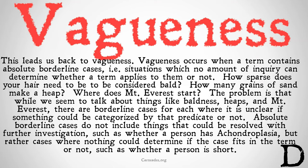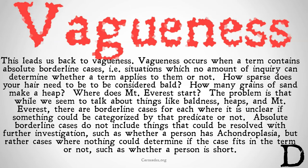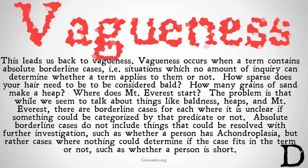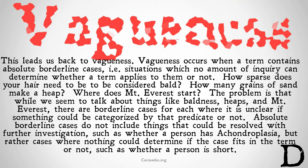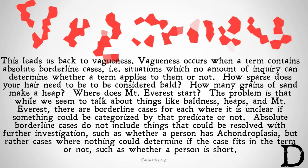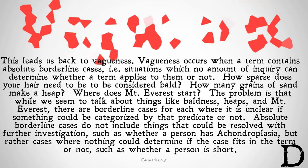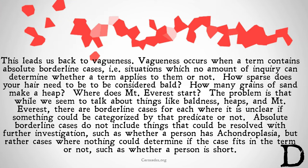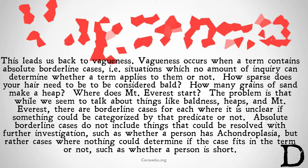No amount of counting the number of hairs on someone's head, the number of grains of sand in the heap, or the distance to the summit of Mount Everest is going to definitively determine if that predicate applies. Absolute borderline cases do not include things that could be resolved with further investigation, such as whether or not a person has achondroplasia, but rather cases where nothing could determine if the case fits the term or not — such as whether or not a person is short.